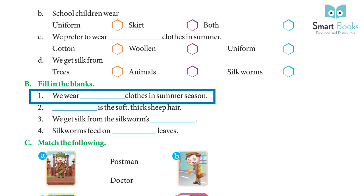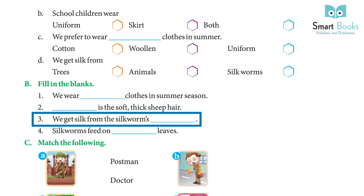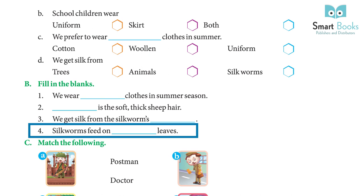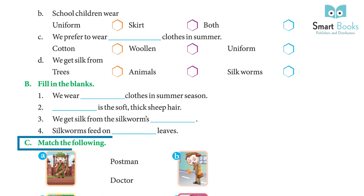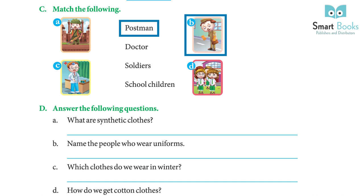Exercise B — Fill in the blanks: 1) We wear cotton clothes in summer season. 2) Wool is the soft thick sheep hair. 3) We get silk from silkworms. 4) Silkworms feed on mulberry leaves. Exercise C — Match the following: soldiers, postman, doctor, school children matched to their respective uniforms.